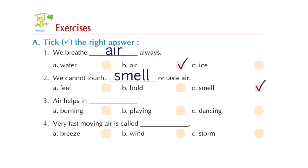Number three, air helps in dash. Option A, burning. Option B, playing. Option C, dancing. Which is the correct option? Yes, Option A, burning. Air helps in burning.